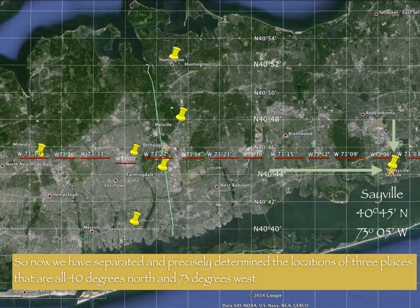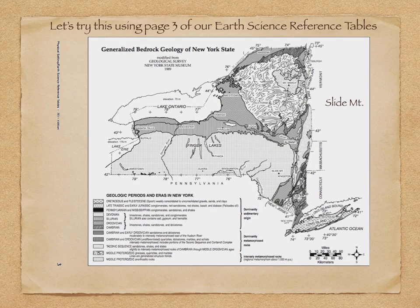So what we've done is we've separated and precisely determined the location of three places that previously were just all 40 degrees north and 73 degrees west. Now we're going to be using page three of our earth science reference tables, or our ESRT, and this is a page that you're going to be needing to apply this minutes idea to.